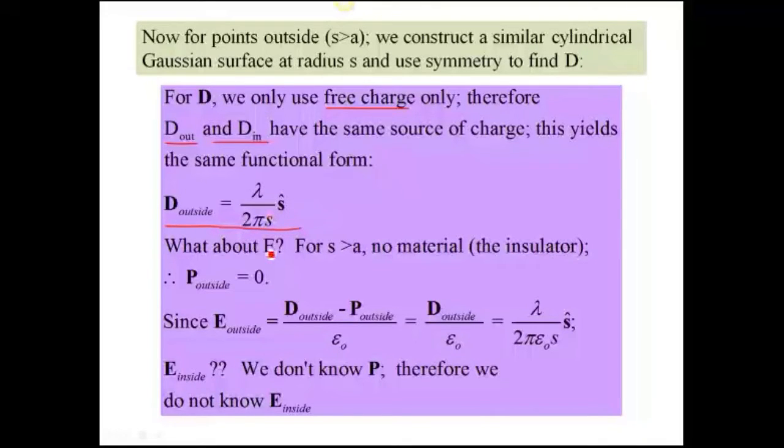Okay, what about E? For S greater than A, there's no material out there. There's no insulation. So the polarization vector on the outside is equal to 0. If we go back to our definition of D, we can solve for E outside, and we get D outside minus P outside, divided by epsilon 0. This is equal to 0. So we end up with D outside over epsilon 0, but we have that D, and it's equal to this. So the only difference between D and E outside is epsilon 0 in the denominator.